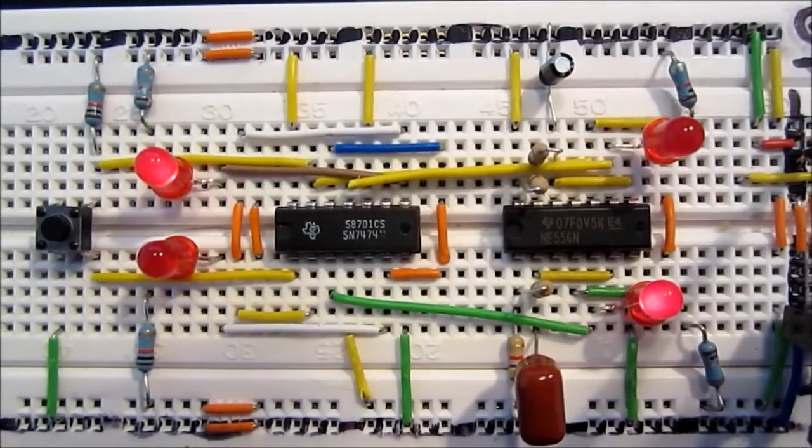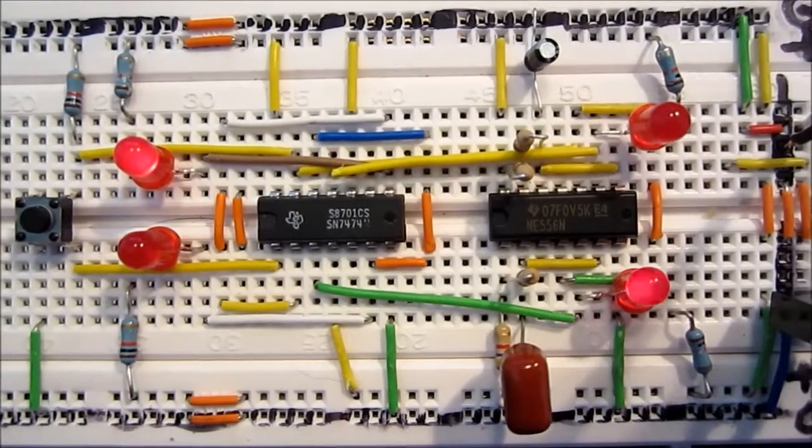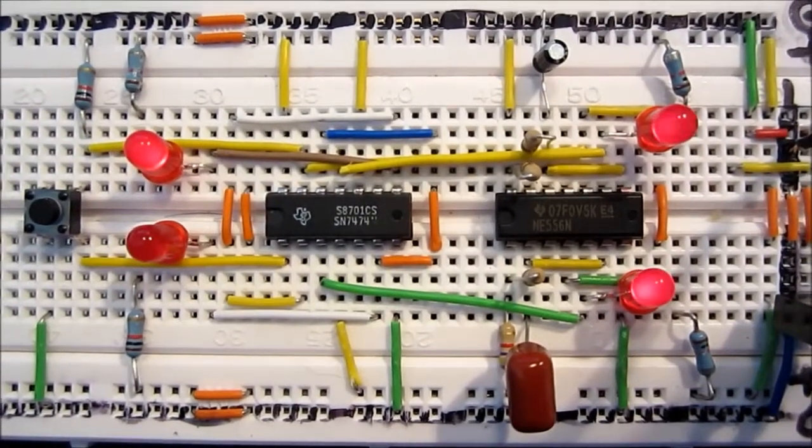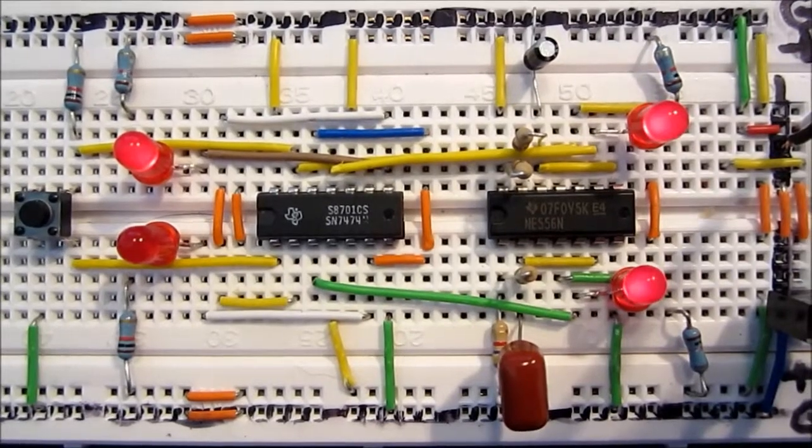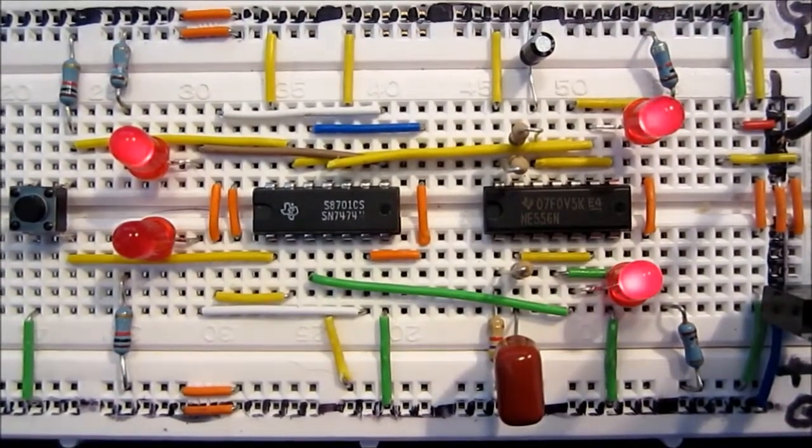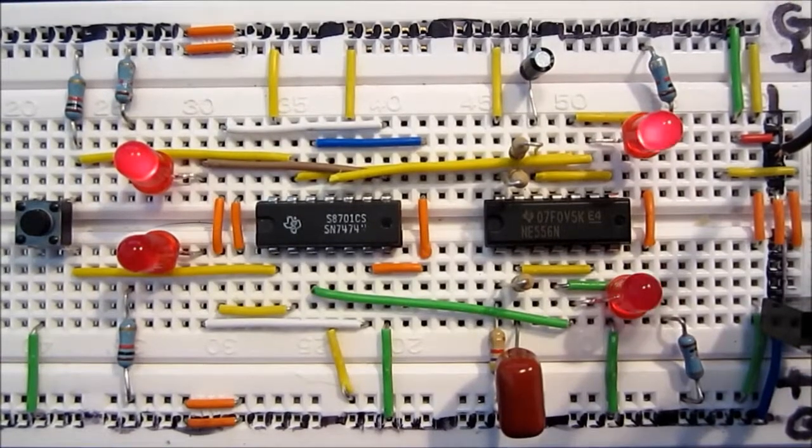So one of the ways of solving this situation of the deadly embrace, or the two state machines being locked together and therefore they can't come to a compromise in terms of one being in one state and one in the other, is to run each state machine on a separate clock.